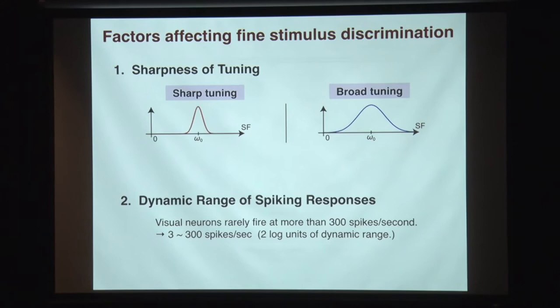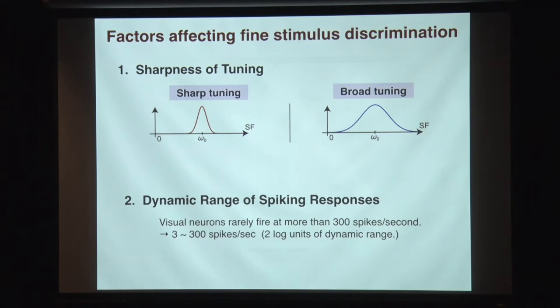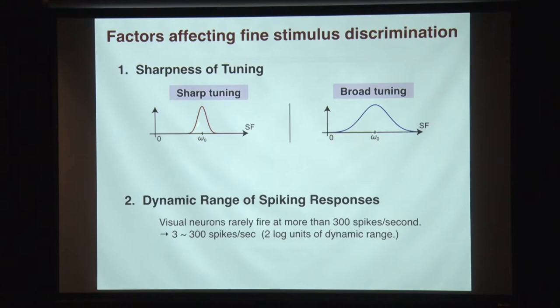One is sharpness of tuning. I completely agree with Gabrielle about sometimes you can't really label the axis. Here, I'm mainly working in V1, so we can still label the axis — for example, spatial frequency. We have sharp tuning and broad tuning for the ability to discriminate stimuli.